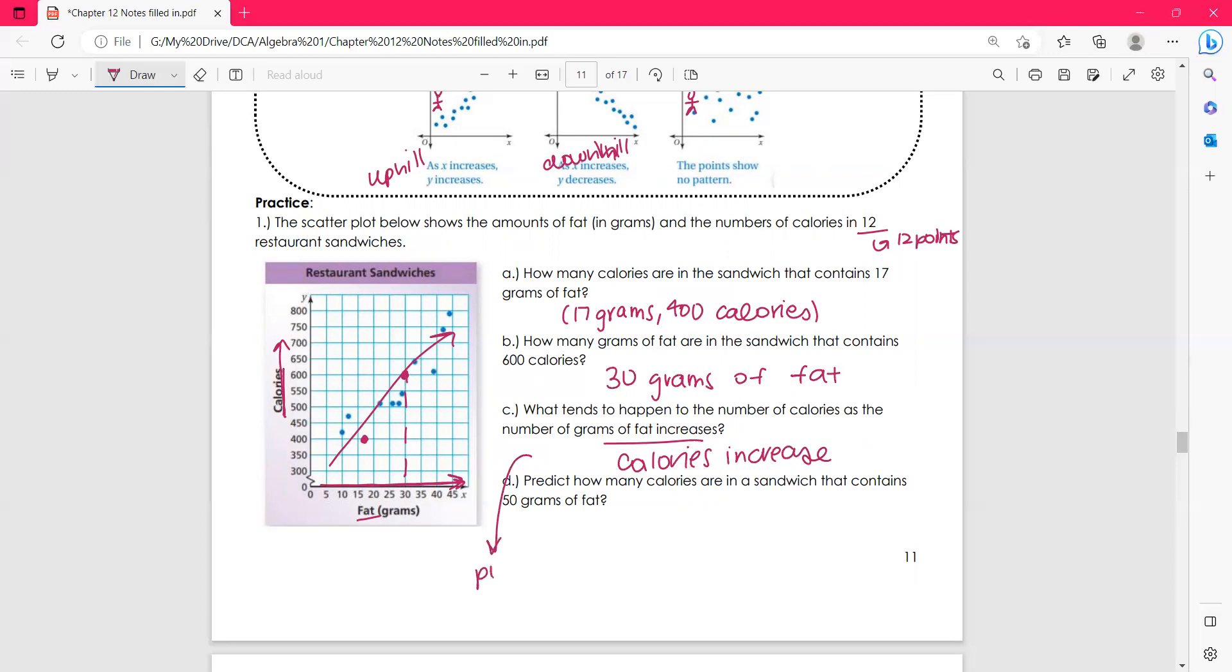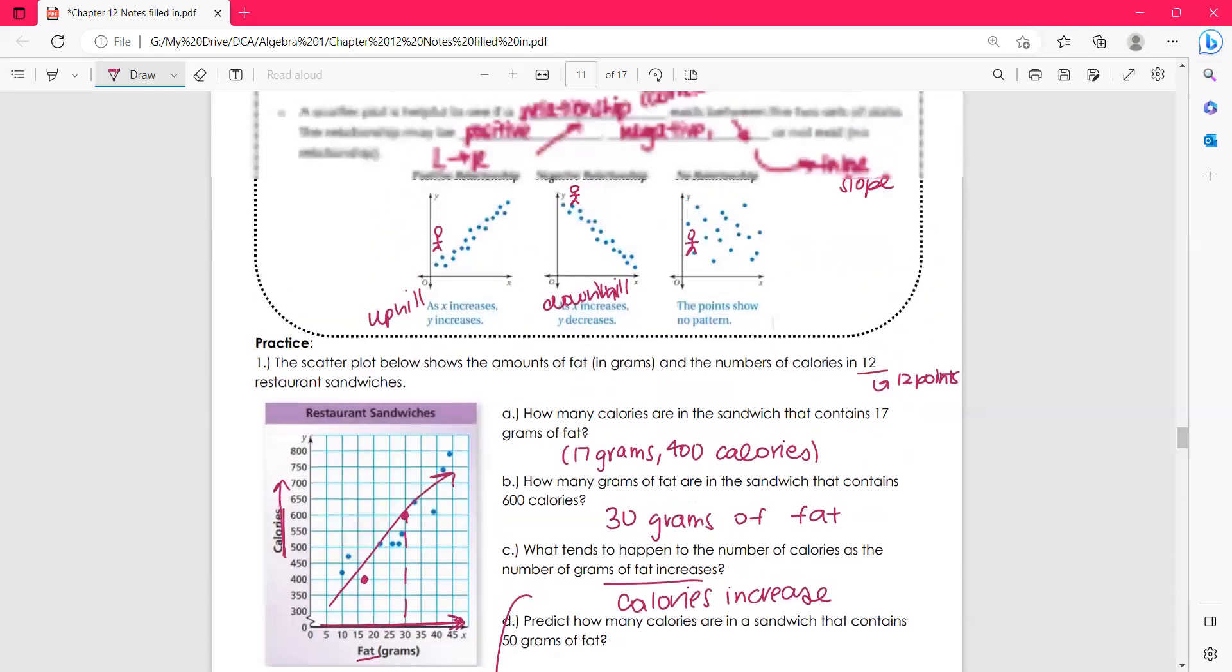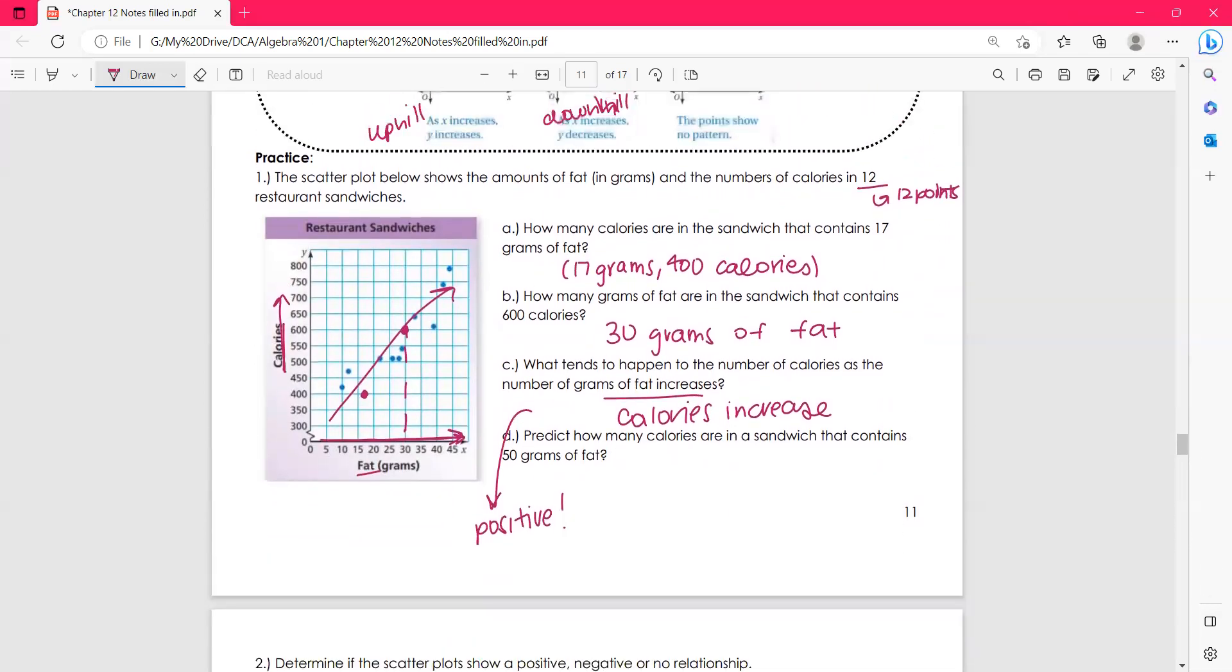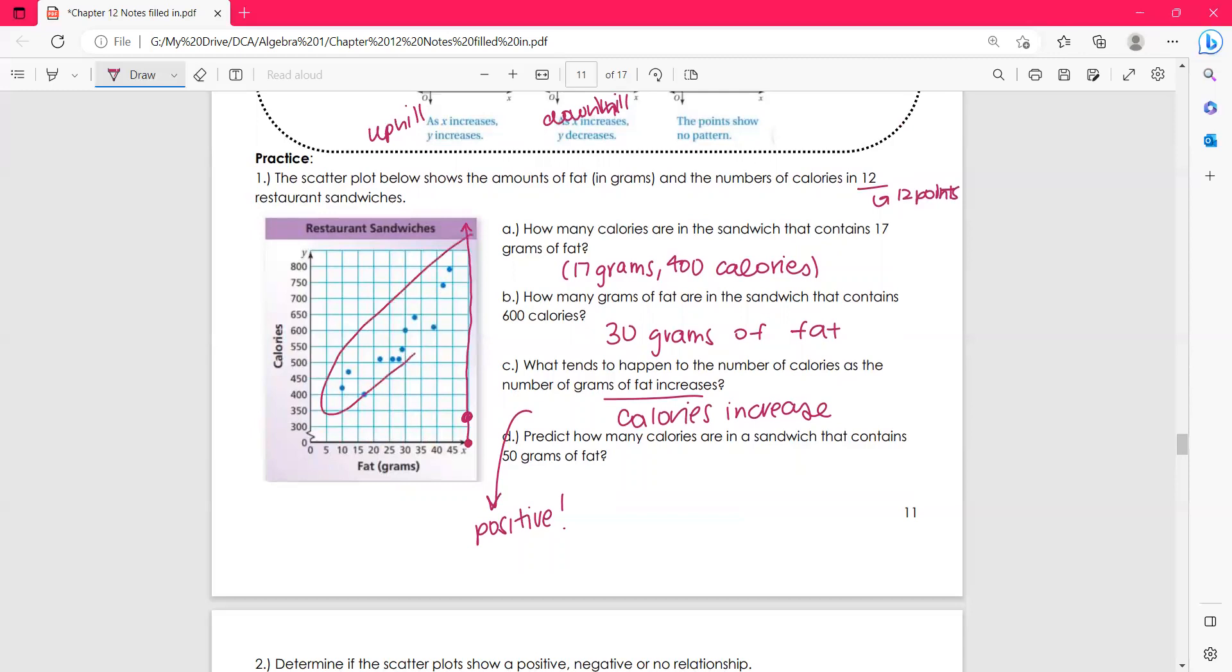So this has a positive correlation, right? A positive relationship. Predict how many calories are in a sandwich that contains 50 grams of fat. That's the great thing about a scatterplot is we can do predictions. So if I go to 50 grams of fat, that's over here. And if I follow this line all the way up, obviously I'm not going to put it down here. That's probably not the amount of calories. We have to follow this general trend. So anywhere in this region would be pretty fair game for us to say. So we can say maybe about 810 calories. On a quiz you could give me any amount in that region that would make sense with where the trend is going.